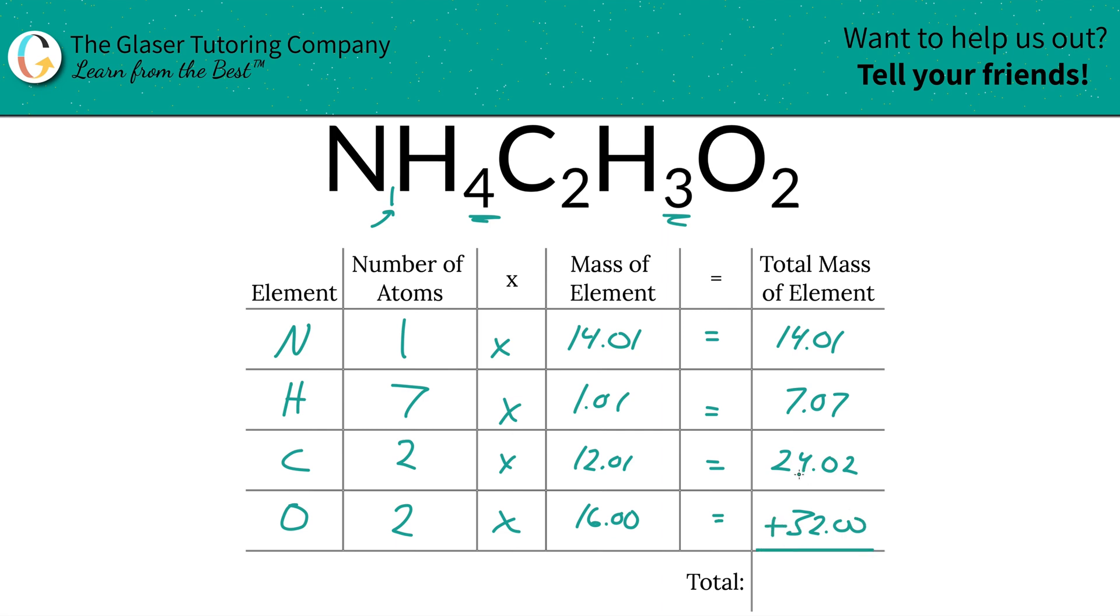Now, to find the total mass of the entire compound, you simply add up all the total mass of each element. Look at how nice and simple that is. So 77.10, and that's grams per mole because we're finding molar mass.